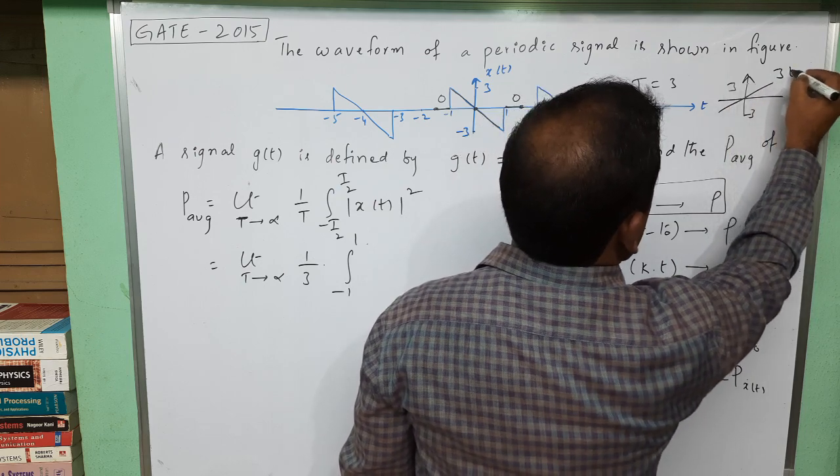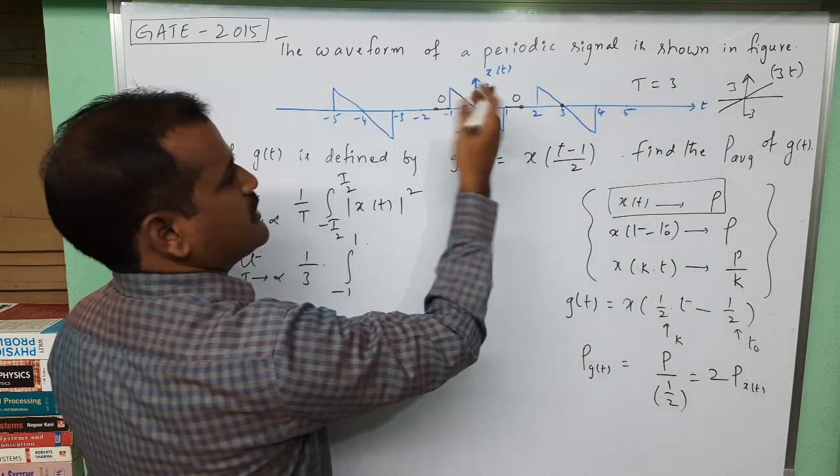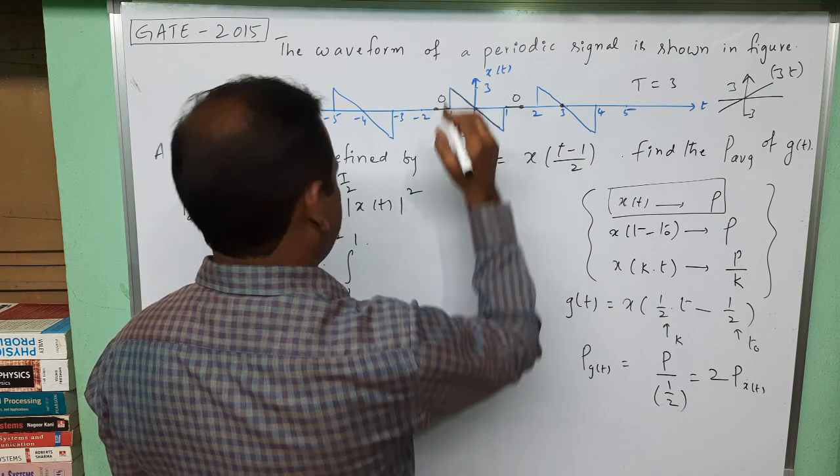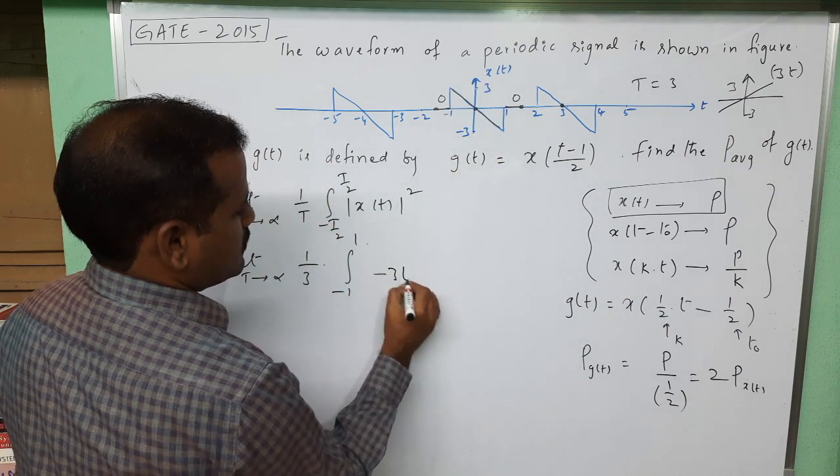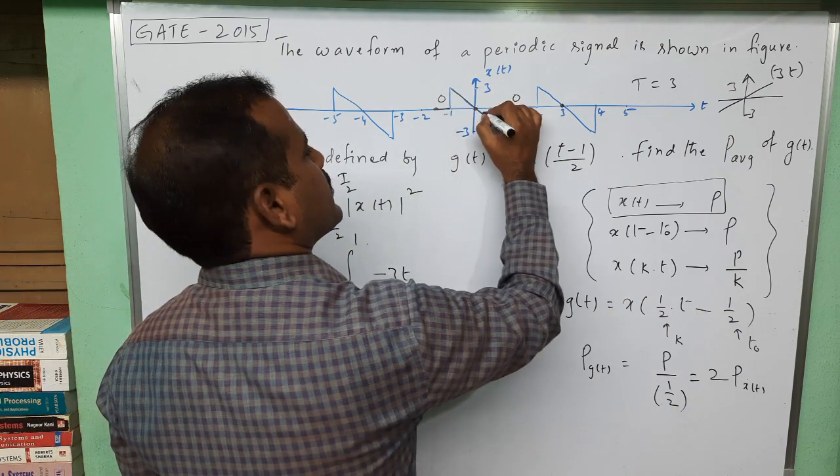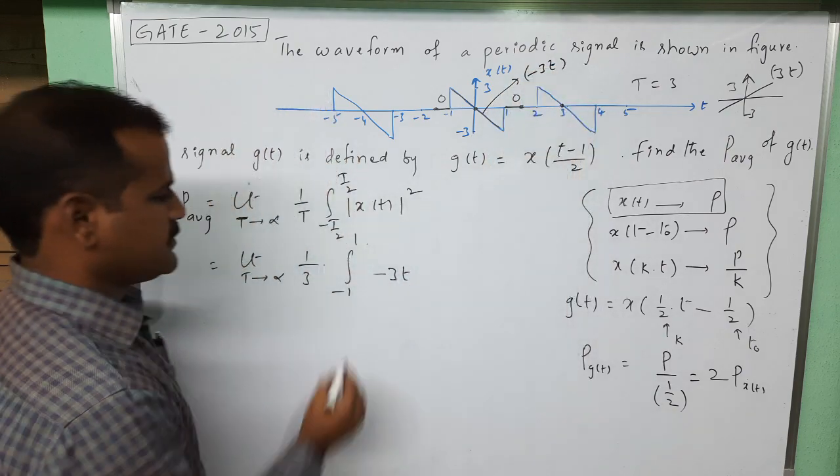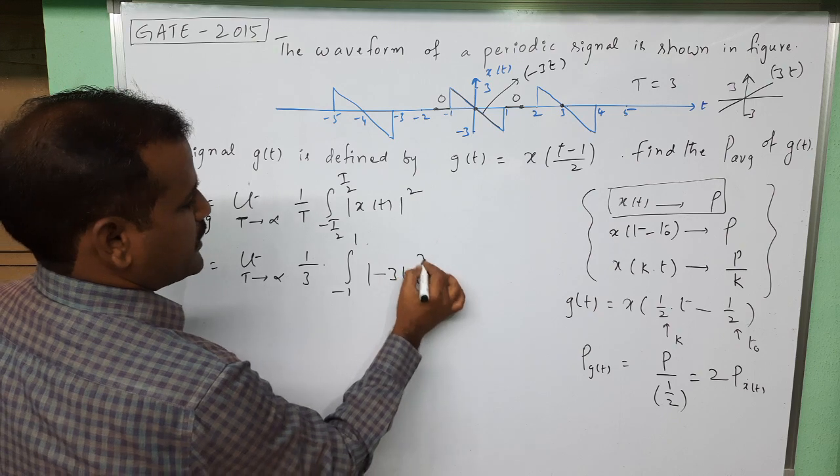This signal is: if you take this signal, the amplitude is minus 3 to plus 3. This signal is 3t, but this signal is a reflection of that signal, so this should be minus 3t. So this is the waveform equation here: minus 3t. So the integral becomes (-3t)² dt.